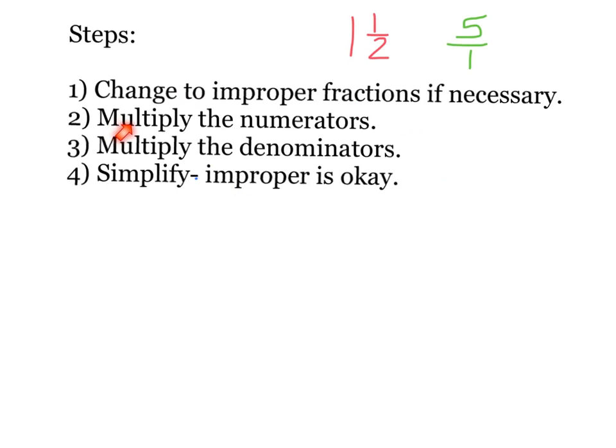Then it's pretty easy — you just multiply straight across. The numerators are the tops, then multiply the denominators, and finally simplify. And just as a quick reminder, improper fractions are okay to have.